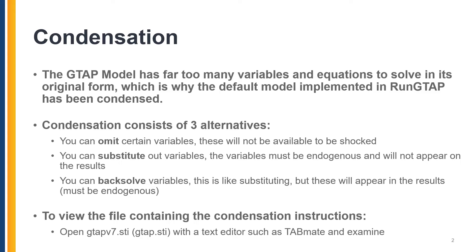To view the instructions on how your model has been condensed, you would want to look in the main folder of Run-GTAP — the file named GTAP version 7.sti for the newest GTAP model version 7, or the classic version GTAP.sti. Open it with any text editor, such as TabMate, and examine it to observe whether you are omitting a variable, substituting, or back-solving.